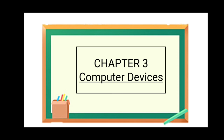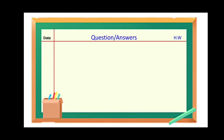Open the new page of your copy and make a title page of Chapter 3: Computer Devices. After making a nice and beautiful title page, open your next page. I am writing the questions on the board and you have to copy them in very neat and clean handwriting. Mention today's date on the red line, write question answers with blue color, and then write HW. The questions should be written in blue and answers with your pencil.